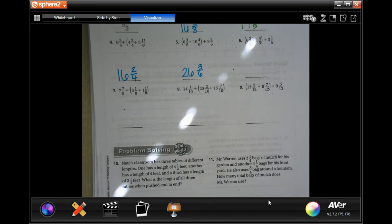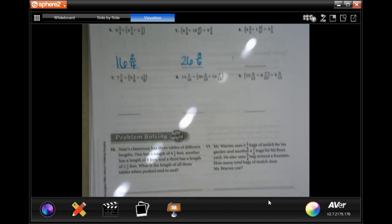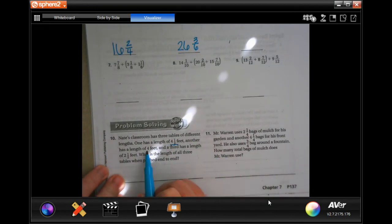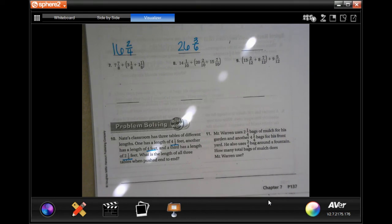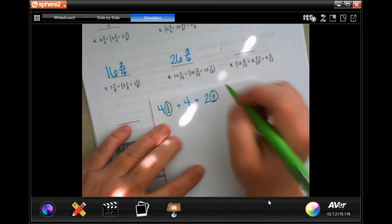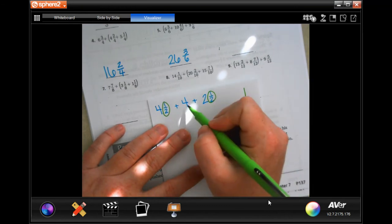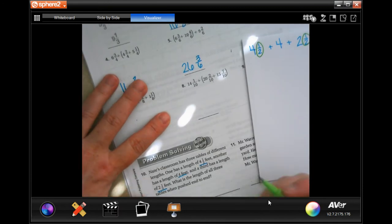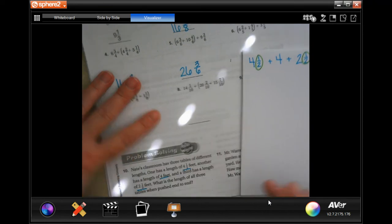Nate's classroom has three tables of different lengths. One has four and a half feet, another has four feet, and a third has two and a half feet. So four and a half plus four plus two and a half. Well, this one is going to be super easy because there's one half, there's the other half, that's going to equal one. Then four plus four is eight, plus two more is ten. Eleven feet. That one they made pretty easy for us.